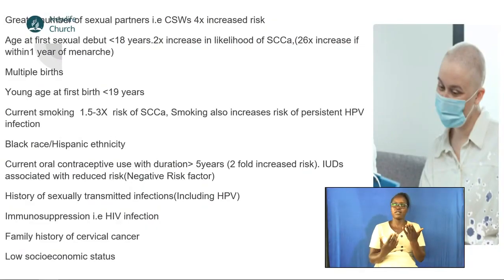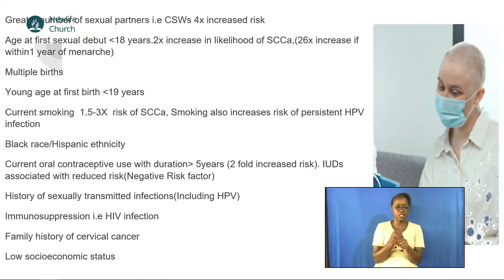Black ethnicity or Hispanic ethnicity is associated with increased risk. Use of oral contraceptives for more than five years doubles your risk. Some studies have shown that intrauterine devices, such as the copper T, are actually associated with a lower risk — they are protective, conferring a negative risk factor. A history of other sexually transmitted infections like gonorrhea and chlamydia also increases risk, because these create weak points in the genital tract through inflammation.